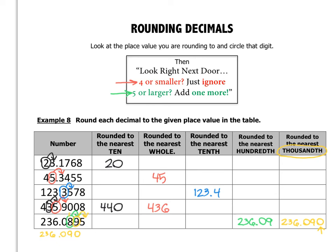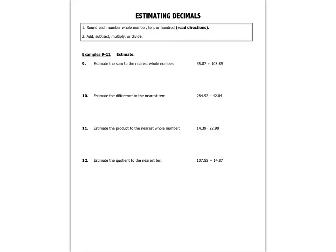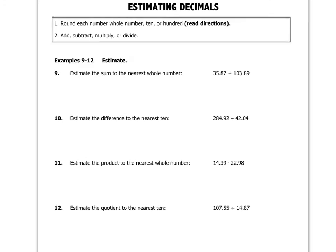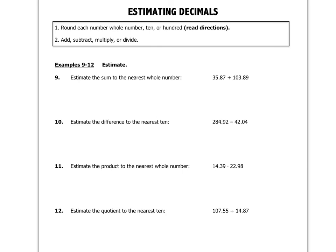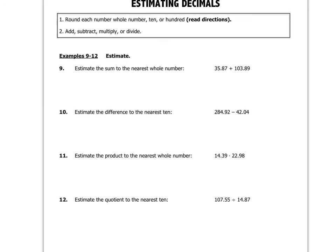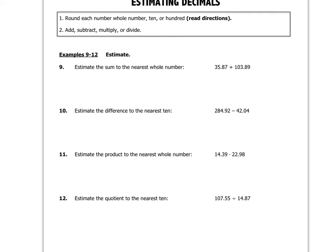I'd like you to fill out the rest of the rounding chart on your own, and we'll check it in class. There's one more section on the back: estimating decimals. When estimating, we round each decimal to the nearest whole, ten, or hundred based on the directions, then add, subtract, multiply, or divide. Remember, estimating gives you an approximate answer, not an exact one.